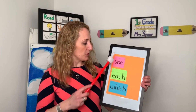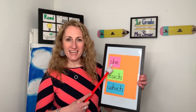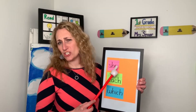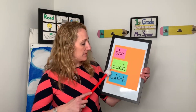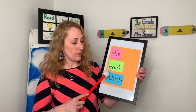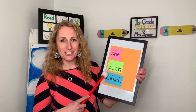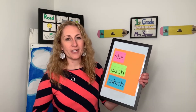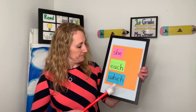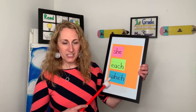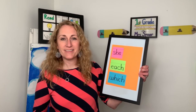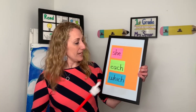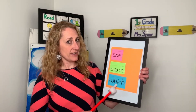So the first word we learned today was she. Say it with me — she. She is my friend. The next word was each. What's this word? Each. That's right — you each are working very hard where you are. This last word is which. What's this word? Which.